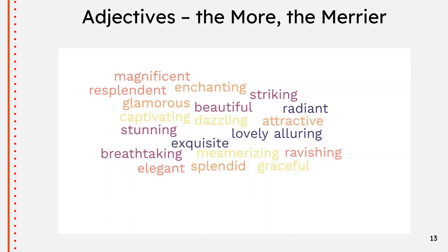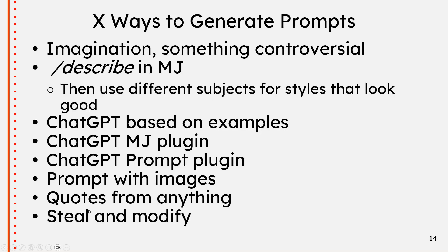Adjectives — the more the merrier. Ask ChatGPT for a list of a hundred adjectives that point to something wonderful and beautiful; they will definitely improve what you're painting. In a story, adjectives may work against you and make it watery, but Midjourney picks them up and improves the image with every word. There are many ways to generate a prompt.